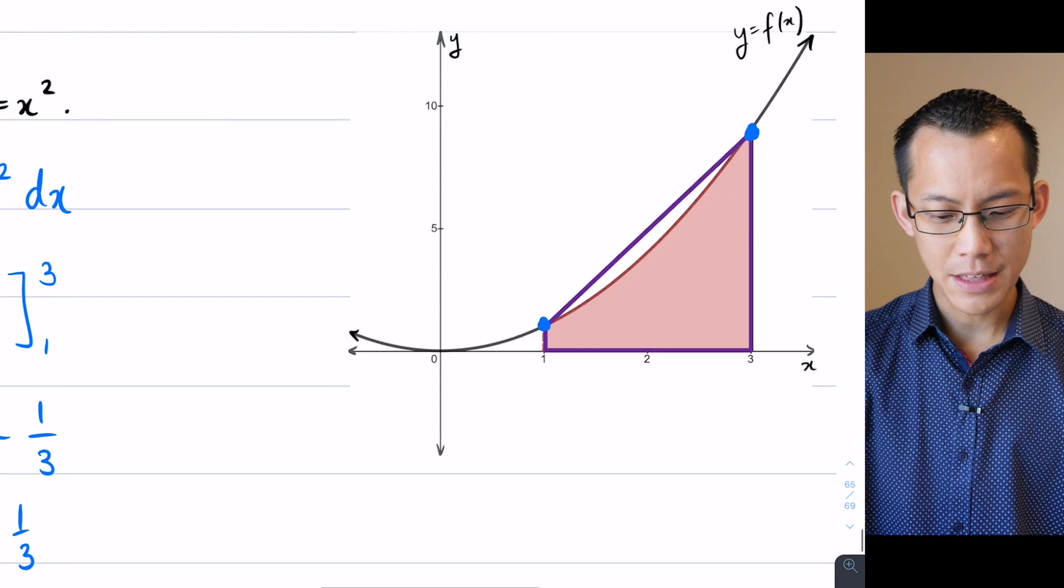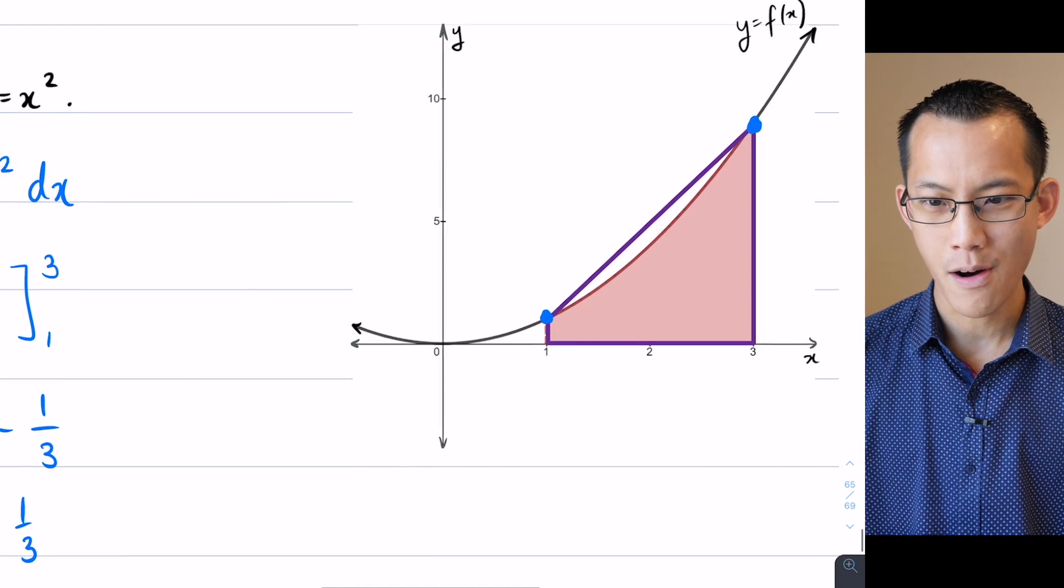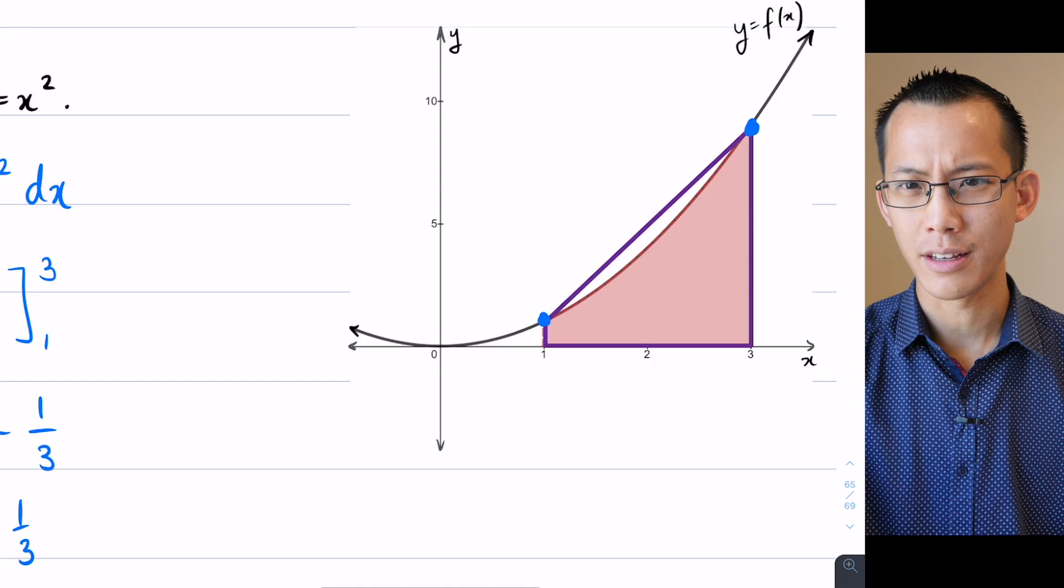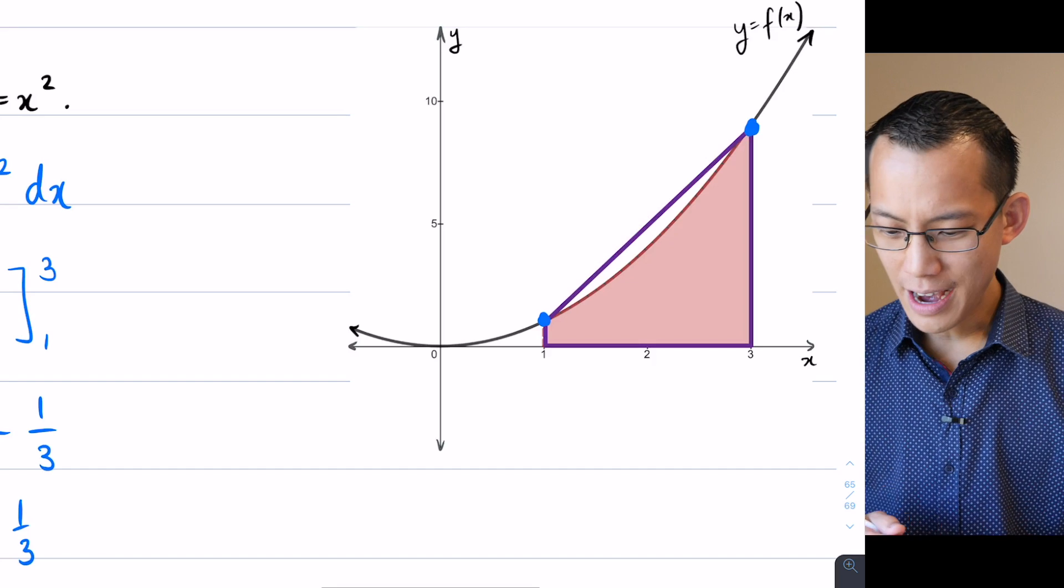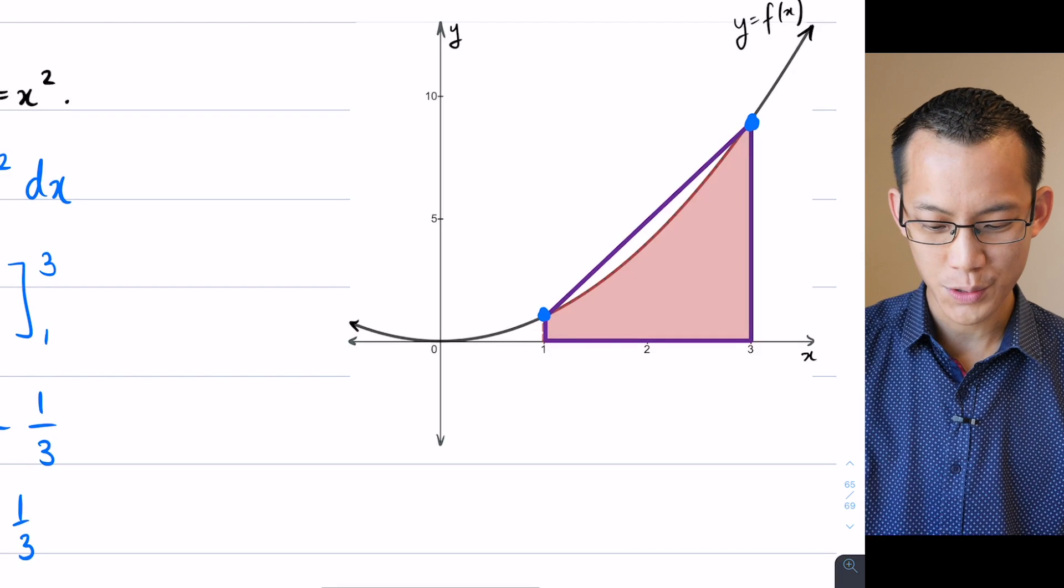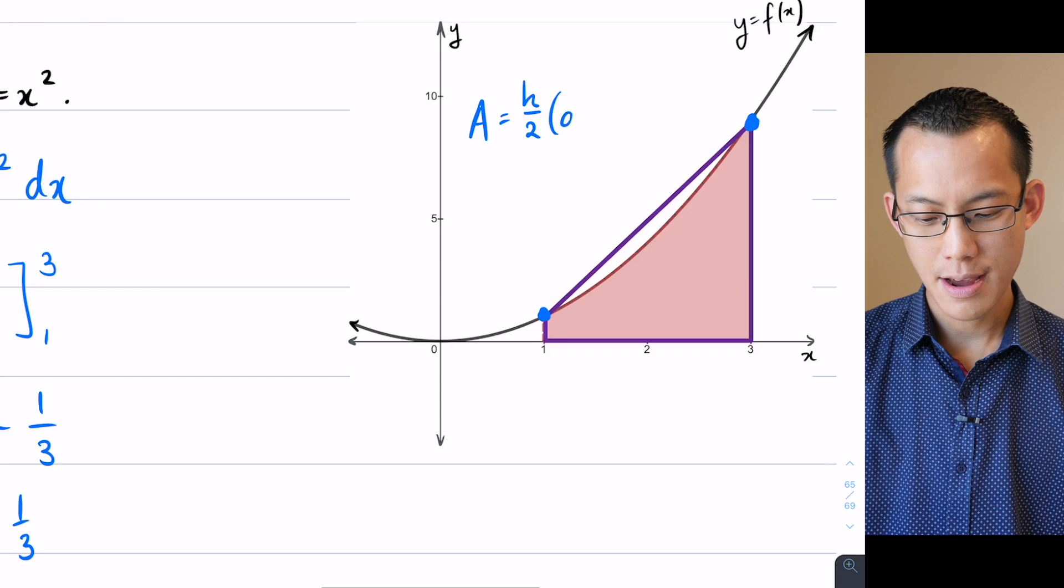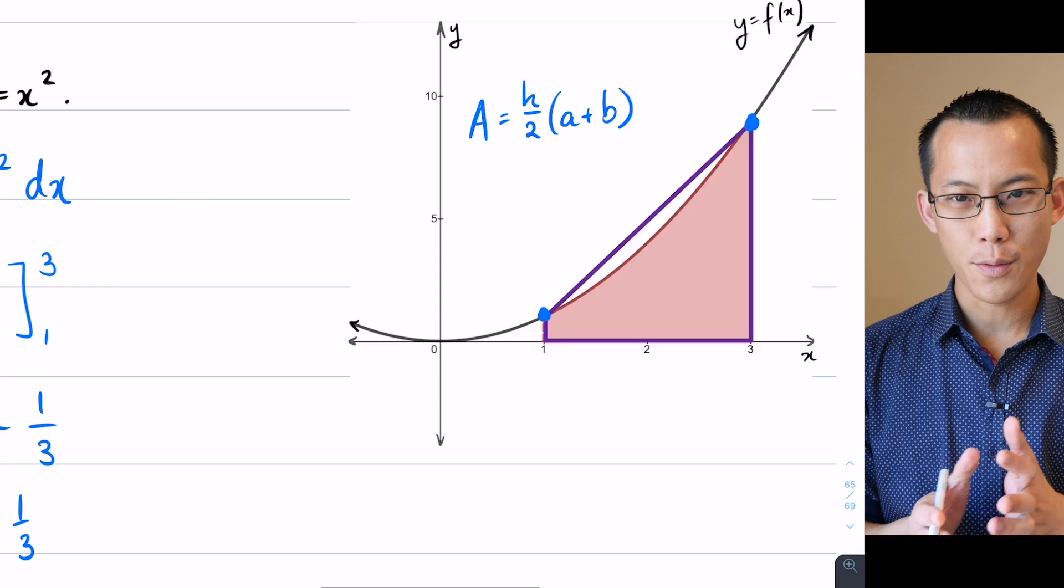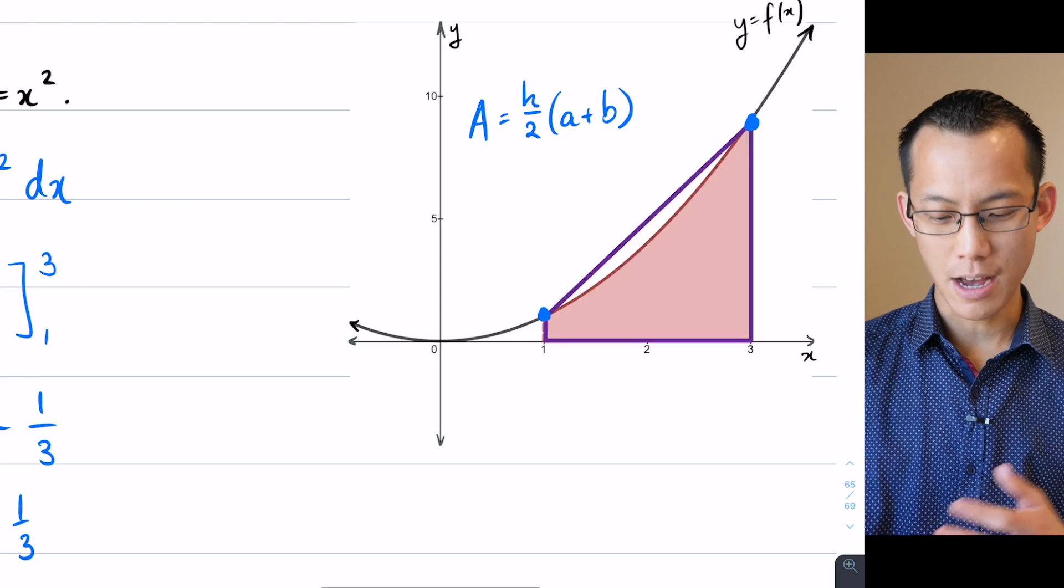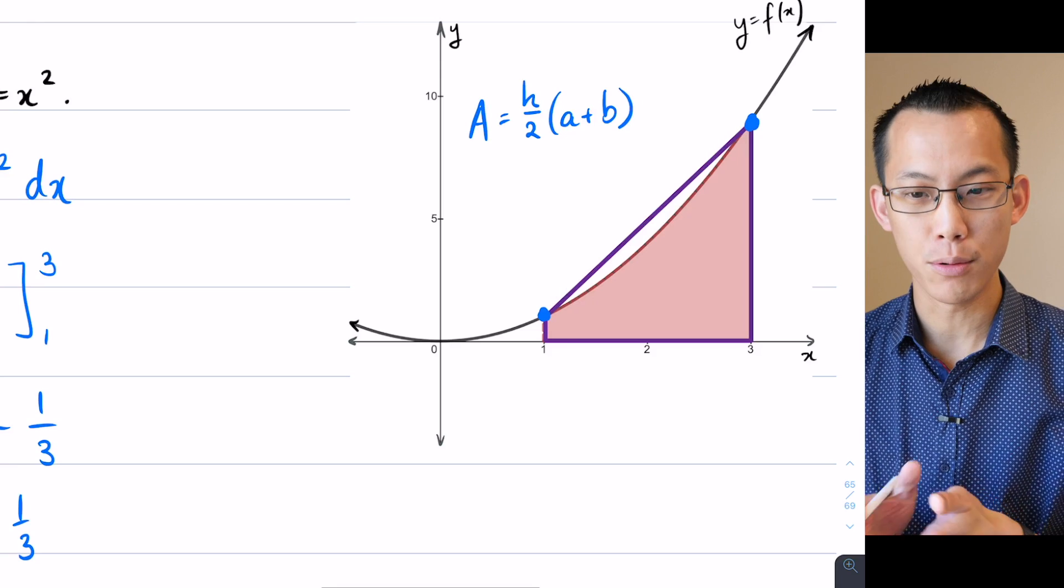Now my question is how do I work out the area of this purple trapezium? The area of a trapezium, this formula is one that you haven't encountered for a while. What I'm doing here is I'm going to be trying to work out using this formula area equals h over 2 times a plus b.